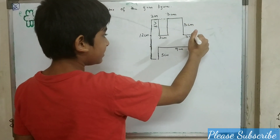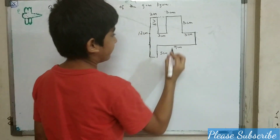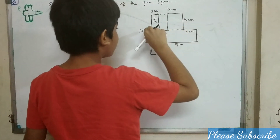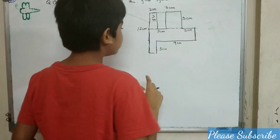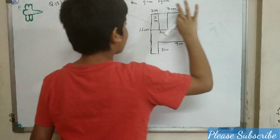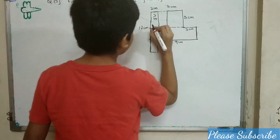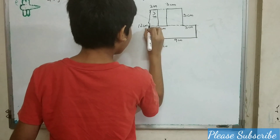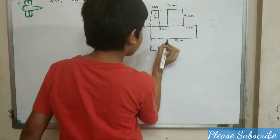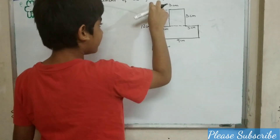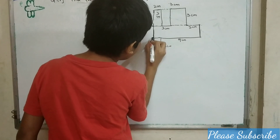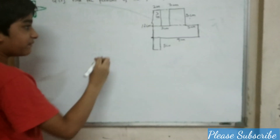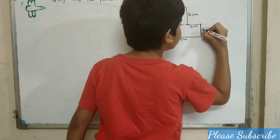3 cm and 3 cm are equal. Some segments are parallel to the longer segments, so we can determine their lengths. 5 plus 3 is 8, and 8 minus 2 minus 8 which gives us some sides as 4 cm.